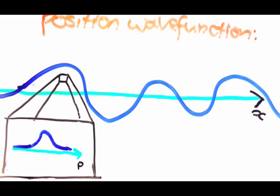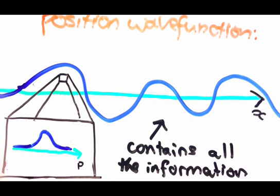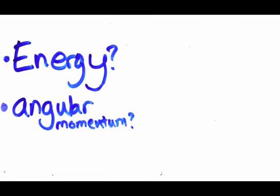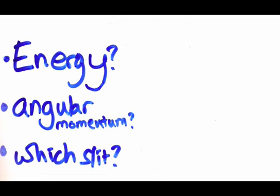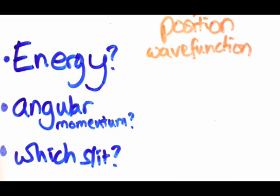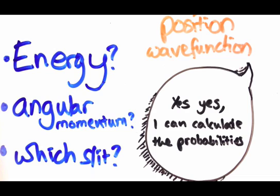In fact, it contains all the information about the particle's state in general. Say we're interested in measuring something else about the particle, like its energy, angular momentum, or in the double slit experiment case, which slit it went through. You can calculate what values are most likely to turn up just from the position wave function.